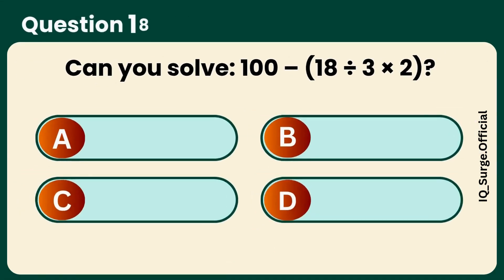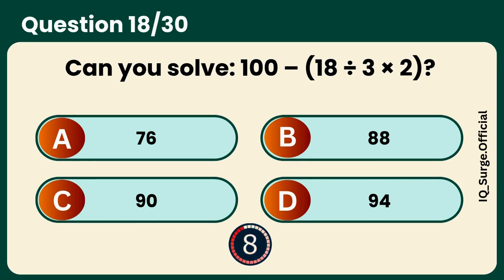Can you solve 100 minus 18 divided by 3 times 2? Answer B, 88.